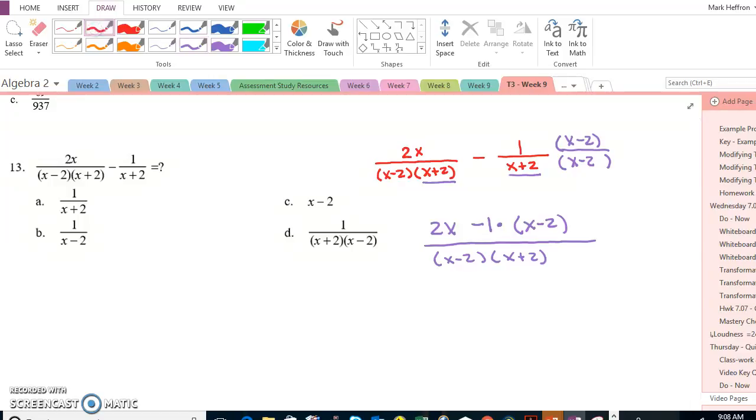So to make sure that we don't drop any negative signs, I need to distribute this negative 1 times both terms in the parentheses.